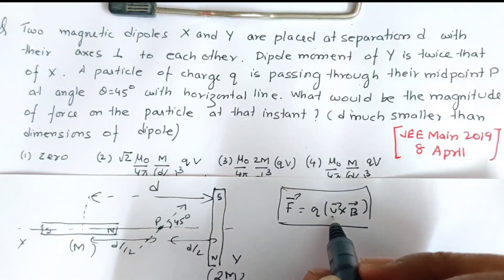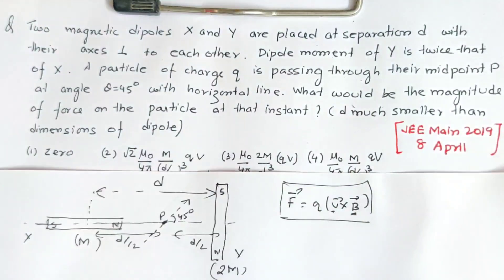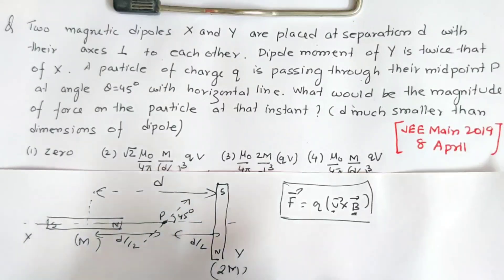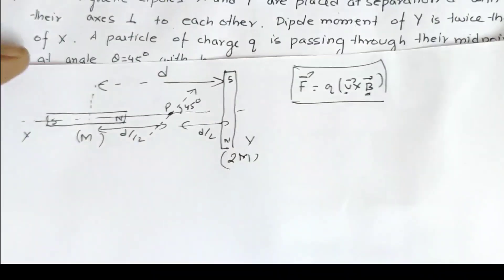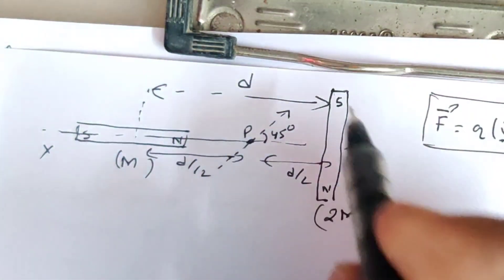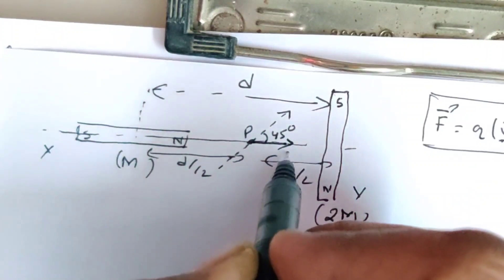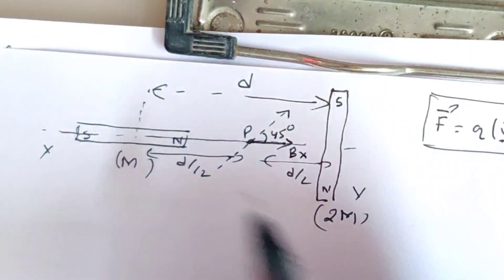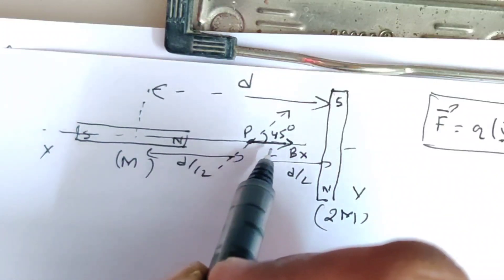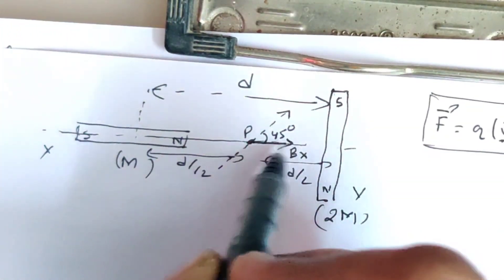Since this is in vector form, we need to find the direction of velocity and the direction of magnetic field. The direction of velocity is already given. Now, point P is along the axial line of this dipole and along the equatorial line of the other dipole. For this dipole, point P being along the axial line, the magnetic field Bx will be in this direction — because along the axial line, the magnetic field is parallel to the axis and in the direction of the dipole moment, which is directed from south pole to north pole.